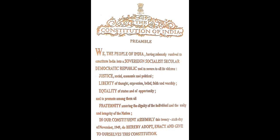The Constitution of India — Preamble. We, the people of India, having solemnly resolved to constitute India into a sovereign, socialist, secular, democratic republic and to secure to all its citizens Justice — social, economic and political — Liberty of thought, expression, belief, faith and worship, Equality of status and of opportunity, and to promote among them all fraternity, assuring the dignity of the individual and the unity and integrity of the nation. In our Constituent Assembly, this 26th day of November 1949, do hereby adopt, enact and give to ourselves this Constitution.